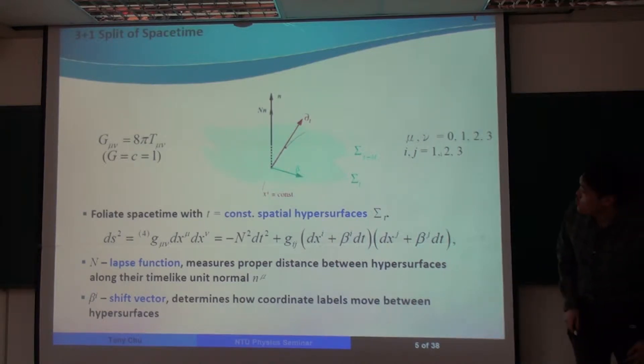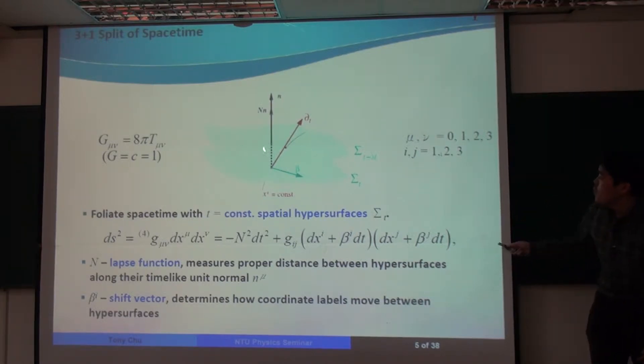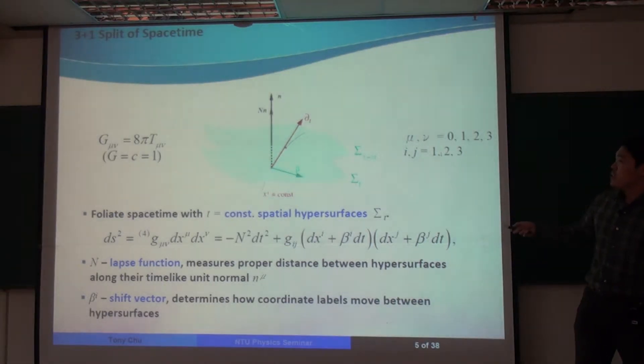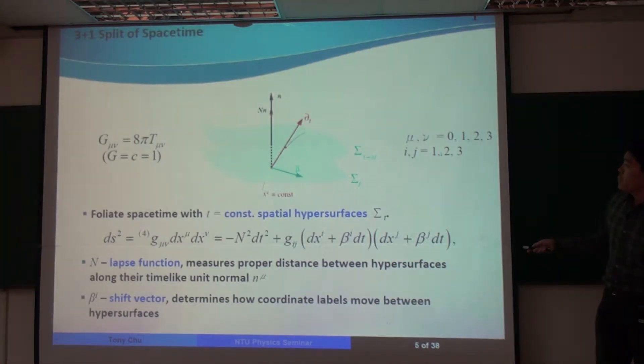And to solve Einstein's equations on a computer, what we typically do is we perform something called a 3 plus 1 split of spacetime. This figure is not showing up very well, but essentially the 3 plus 1 split of spacetime is that we divide spacetime up into a set of constant-time spatial hypersurfaces, which I call sigma t on this slide. This block here is our spacetime. And we divide it up into many different spatial hypersurfaces, one at each time.